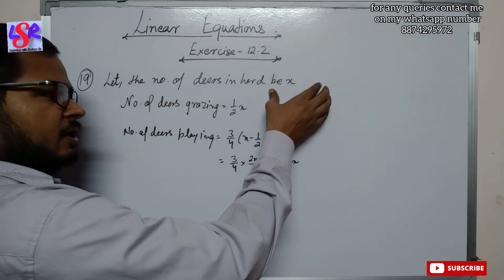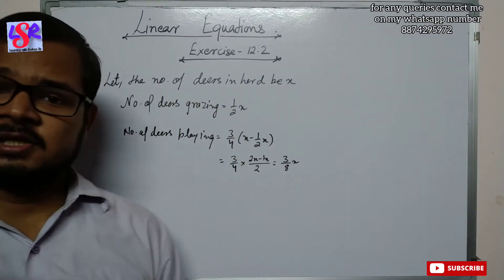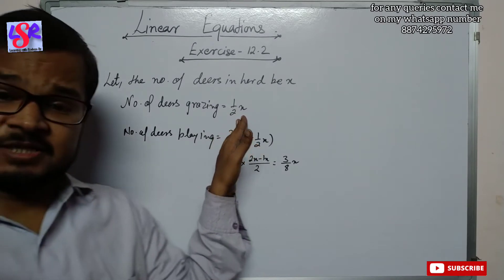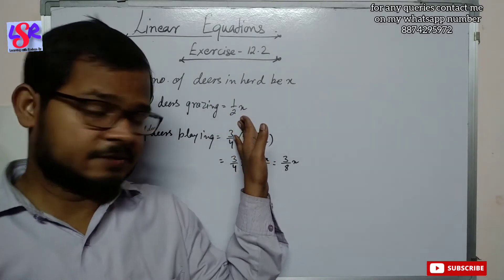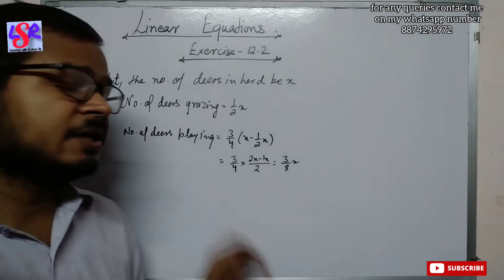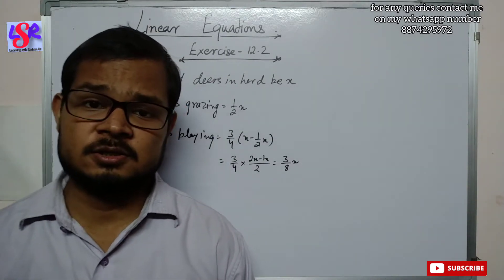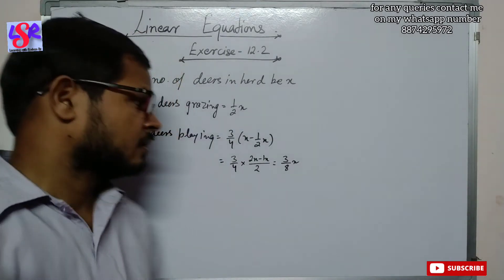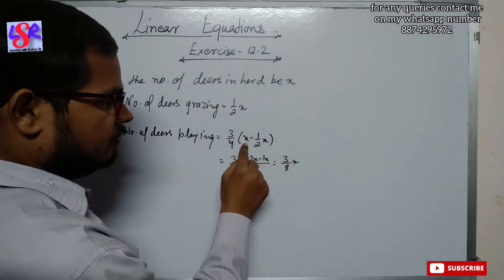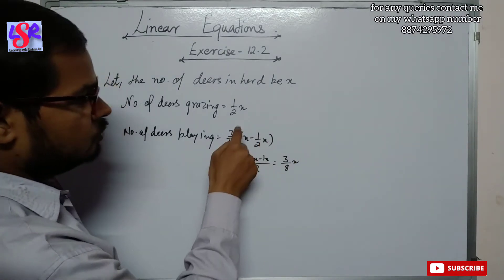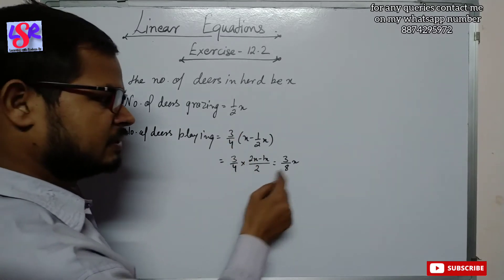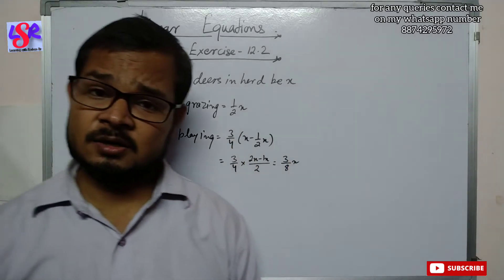Let the number of deer in the herd be x. The number of deer grazing is (1/2)x, as it is half the number of deer. The number of deer playing nearby is three-fourths of the remaining. The remaining is x minus (1/2)x, so the deer playing are (3/4) × (x − 1/2 x) = (3/8)x.